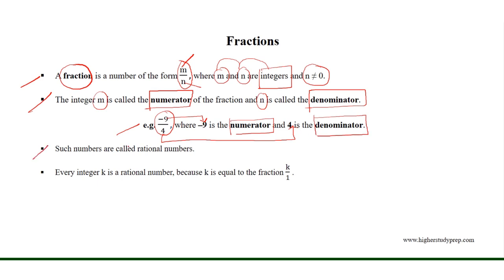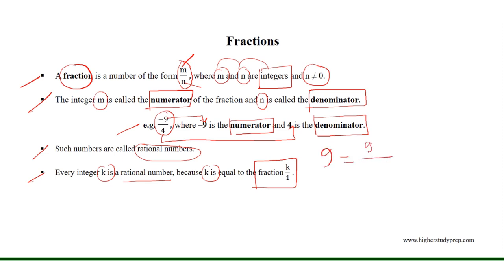Such numbers are called rational numbers, and every integer k is a rational number because k is equal to the fraction k over 1. For example, the integer 9 is a rational number because 9 is equal to 9 over 1, which is a fraction where 9 is the numerator and 1 is the denominator.